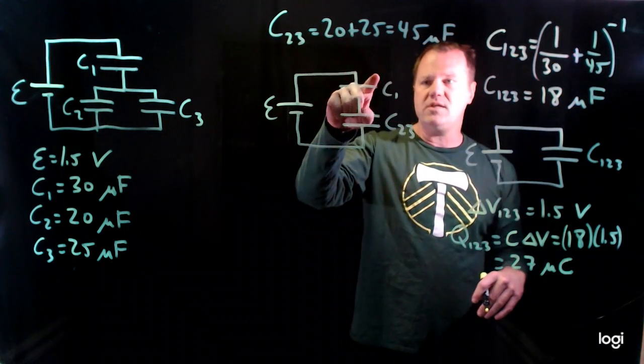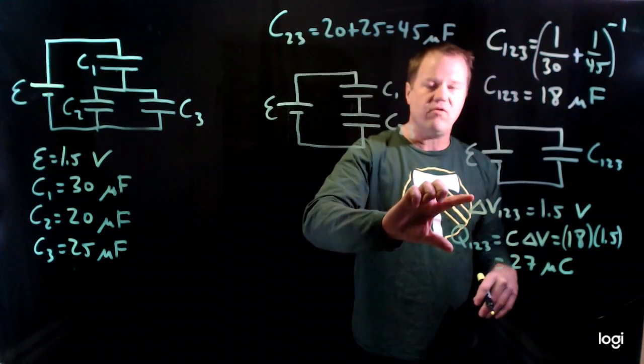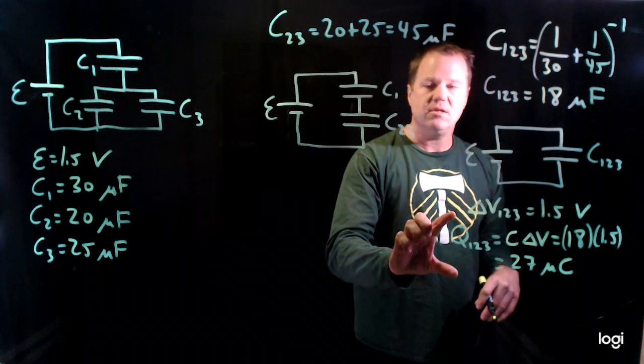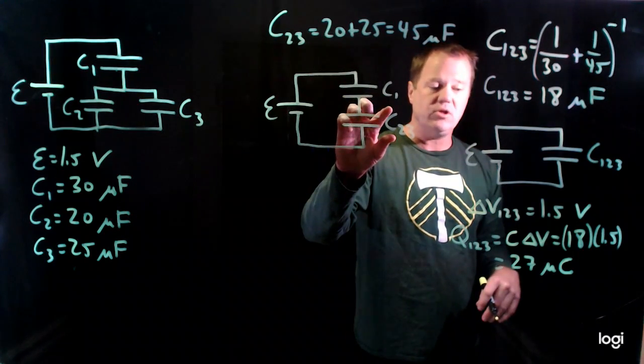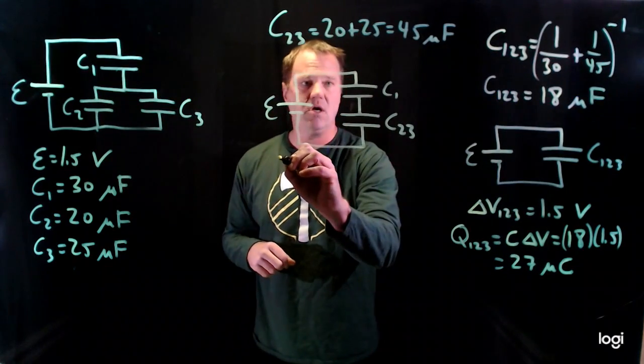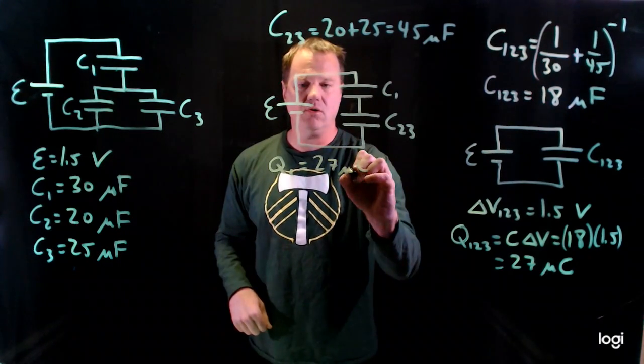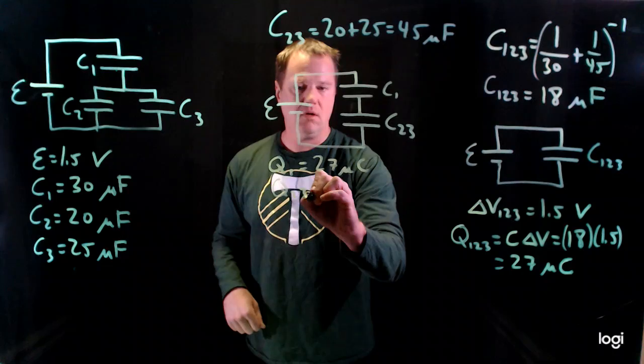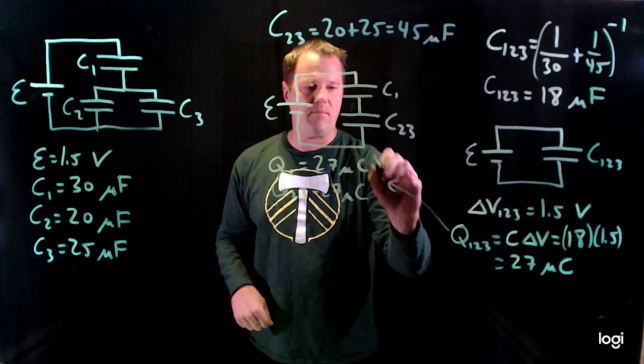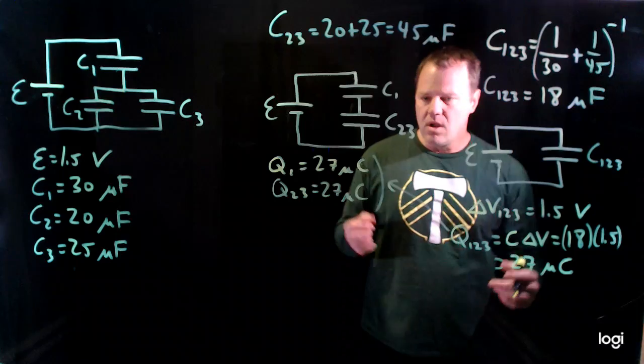So these two are in series, so we need to think about how we use the information about the group and apply it to the series. So the charge is the same. The charge of 1 and the charge of the group 2 and 3 will simply be 27 microcoulombs. So Q1 is equal to 27 microcoulombs. Q23 will also be 27 microcoulombs. We just simply assert that because they are series capacitors, they have to have the same charge.